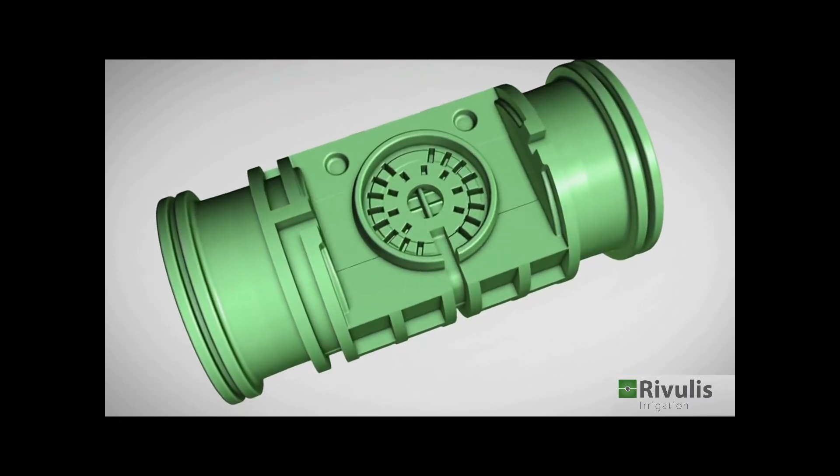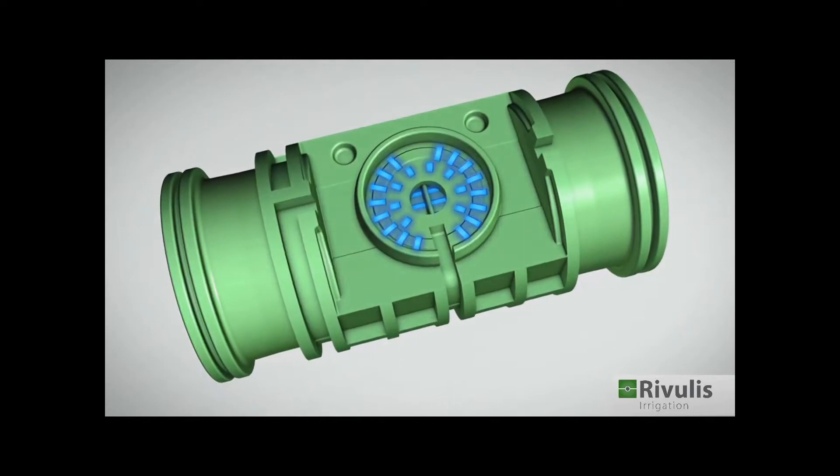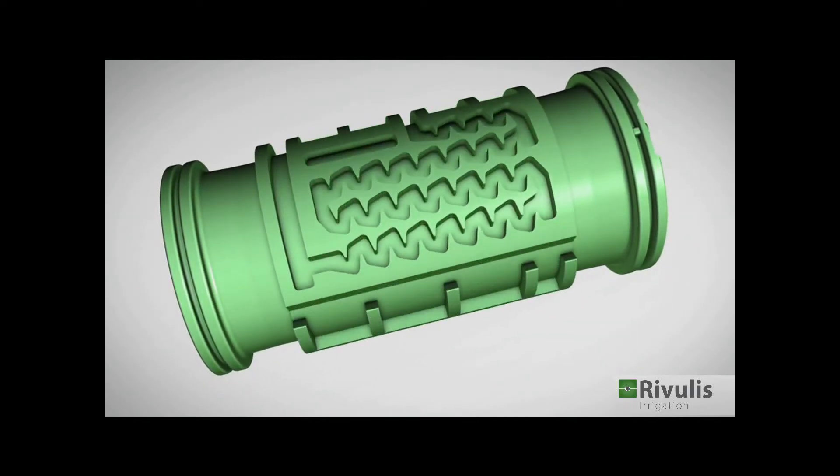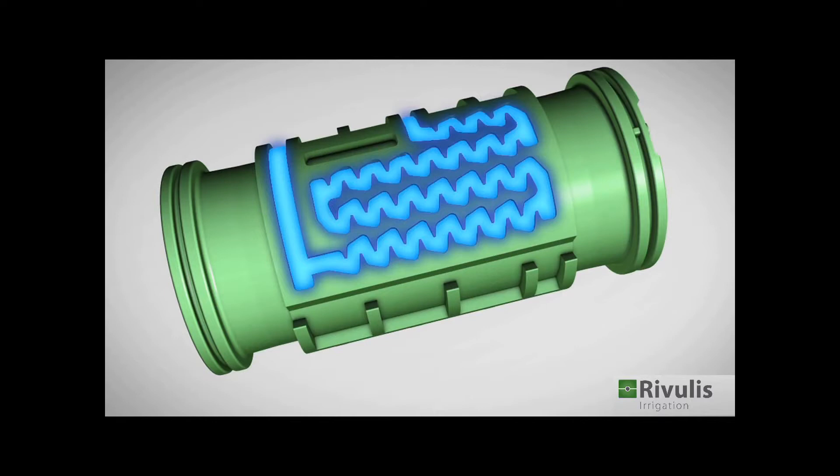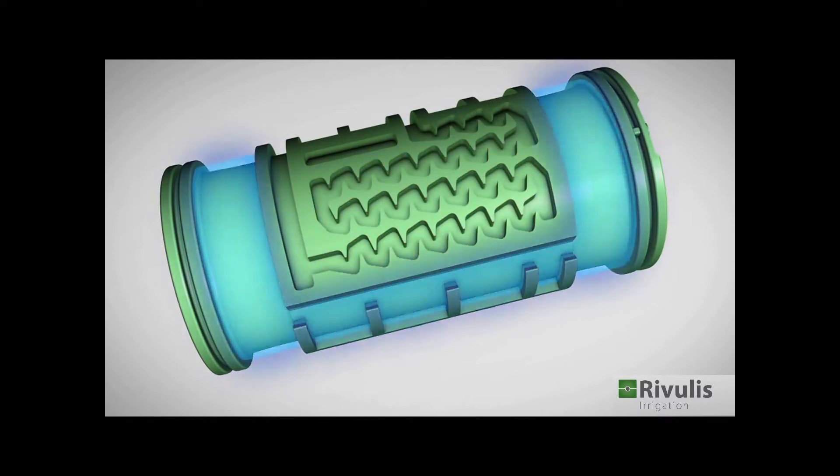Each dripper has its own inlet filter with a large filtering area, an efficient and accurate labyrinth, and two outlet chambers with a connecting channel.